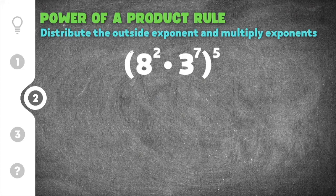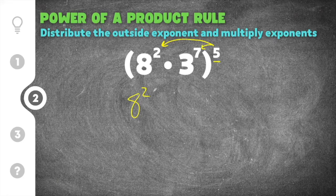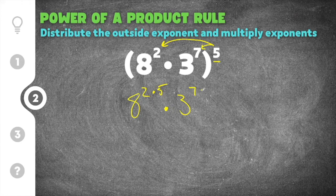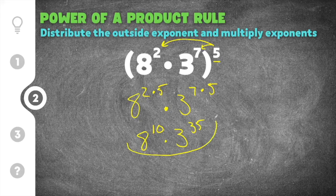Moving on to the second practice problem, this problem gives us the quantity 8 squared times 3 to the 7th, raised to the 5th power. We're going to take the exponent on the outside and distribute it to everything inside of the parentheses — to the 8 squared term and the 3 to the 7th term. So 8 squared is being multiplied to the exponent of 5, and our other base of 3, with its exponent of 7, also gets multiplied by 5. Simplifying: 8 to the 2 times 5 is 8 to the 10th, and 3 to the 7 times 5 is 3 to the 35th. So our solution is 8 to the 10th times 3 to the 35th power. Since these bases are different, we cannot combine this any further — this is the most simplified version.